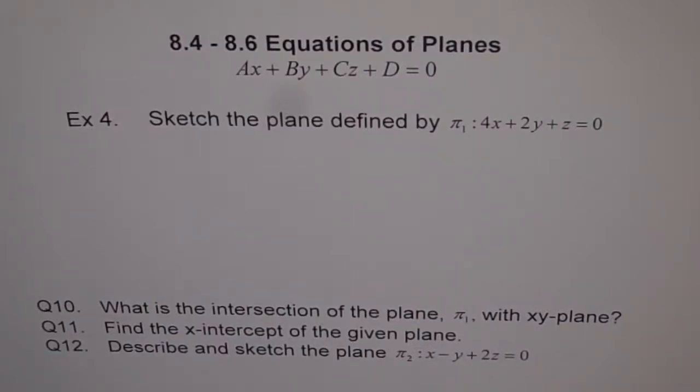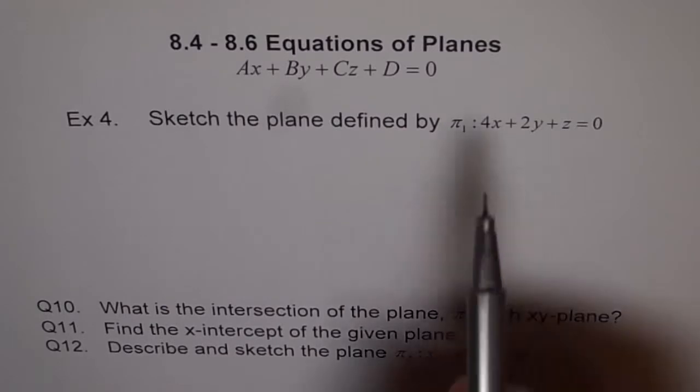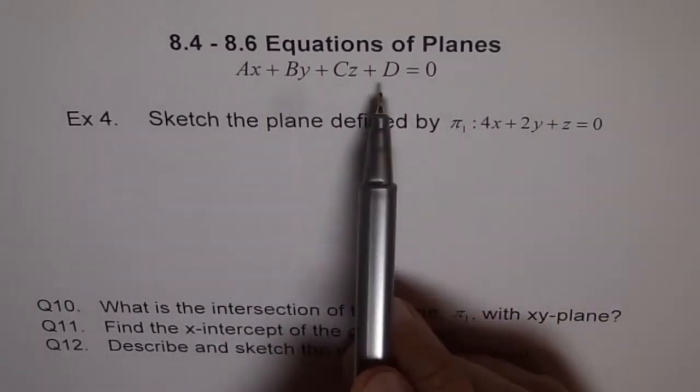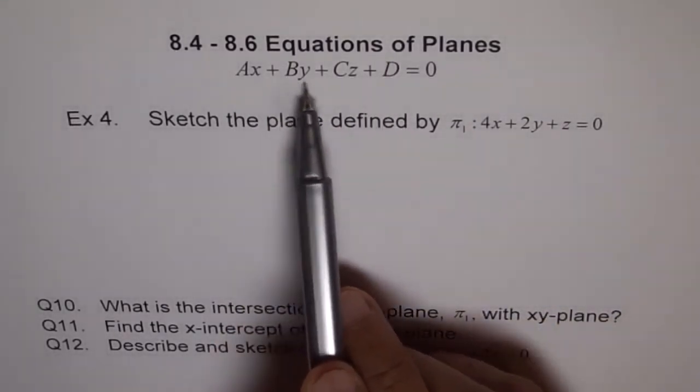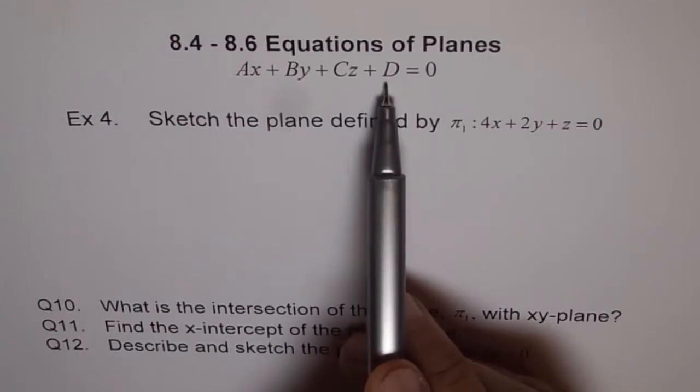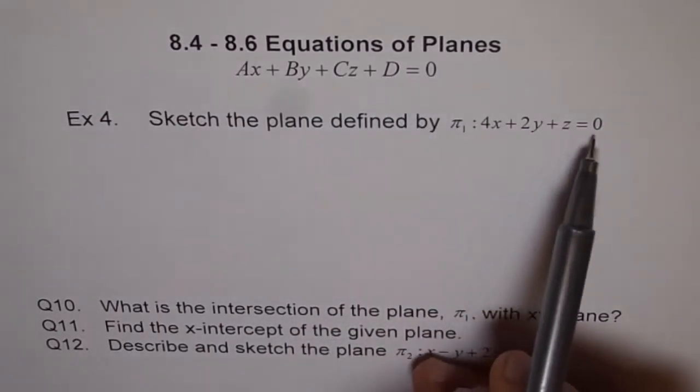Example 4. Sketch the plane defined by pi 1 equals 4x plus 2y plus z equals 0. If you compare it with the equations of plane, you will see that we have all the three variables. But this constant D is 0, right? This constant is 0.